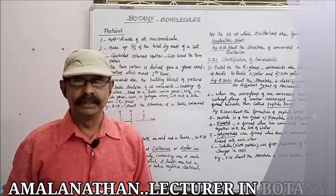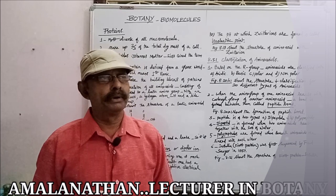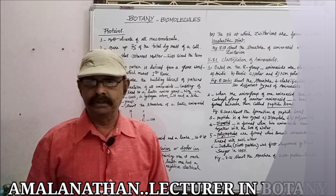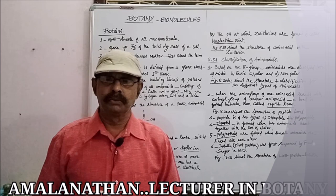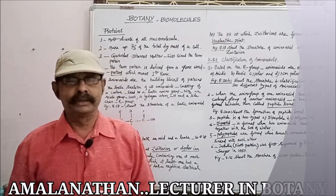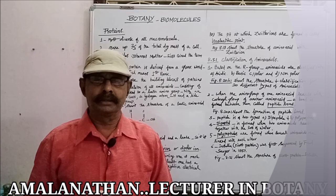The amino acid is both an acid and a base, so it is called amphoteric. Because amino acids behave as a zwitterion or dipolar ion, a zwitterion is a molecule containing one or more functional groups of which at least one has a positive electrical charge and another has a negative electrical charge. The net charge of the entire molecule is zero. The pH at which zwitterions are formed is called the isoelectric point.